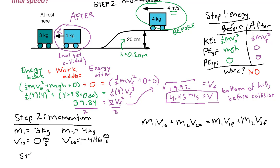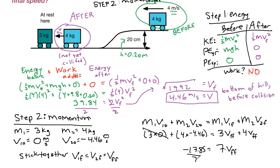Because these stick together, the final velocity of the first is the same as the final velocity of the second. Let's plug in some numbers. 3 times 0 plus 4 times negative 4.46 equals 3 V final final plus 4 V final final. The right side is just 7 V finals. The left side, the first term goes away, leaving negative 17.85. We divide both sides by 7 to get our final answer.